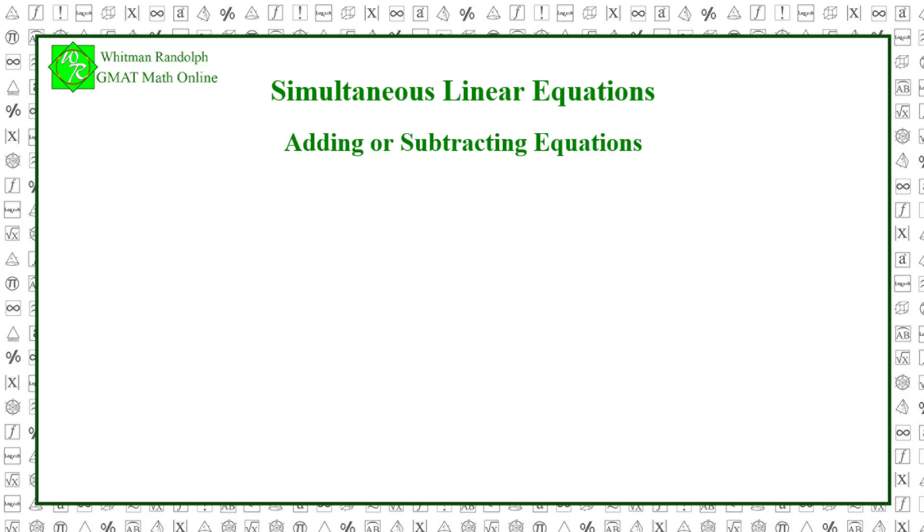Here is solution method 2, adding or subtracting equations. In this approach, we quickly eliminate one of the variables by subtracting one equation from the other. Here's how we do it. We start with the two equations. To make them comparable, in this example, we multiply both sides of the first equation by 4, so that both equations have a term equal to 4y.